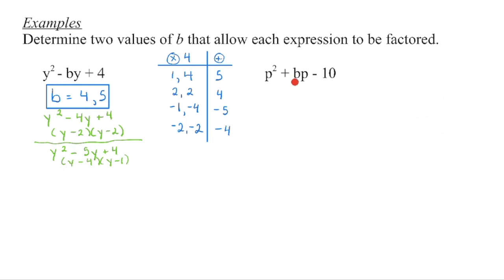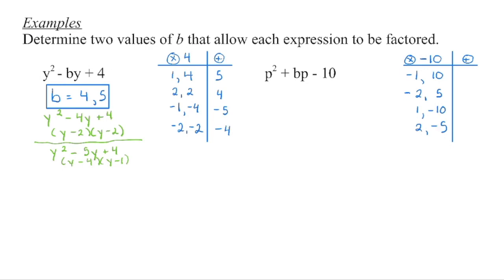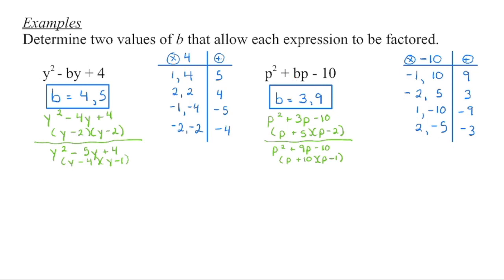Over here, we're looking for the value of b. We need two numbers that multiply to negative 10. Setting up a table in order: 1 times 10, 2 times 5 — 3 and 4 do not divide evenly into 10, and then we loop back around. Because this is a negative 10, one of those numbers has to be negative, so we also list negative versions of each pair. Adding them up, and because this is a positive b, we want the positive values — so b could be either 3 or 9. Substituting 3 in for b, it's factorable; substituting 9 in for b, it's also factorable, giving negative 10 in both cases.